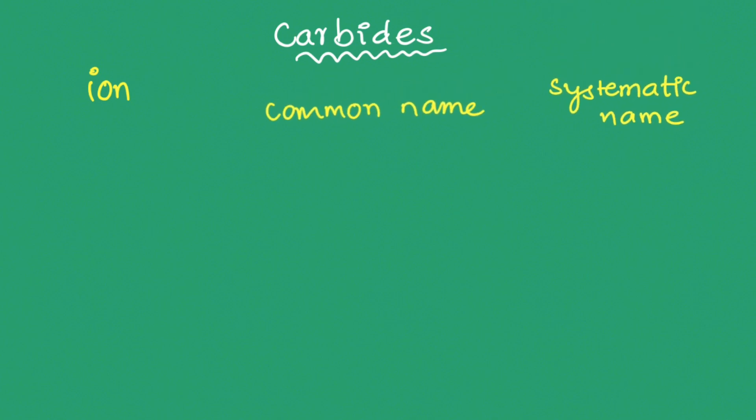Today I want to discuss carbides. We know some examples: aluminum carbide, beryllium carbide, calcium carbide, magnesium carbide. It is somewhat difficult to write their formula because different carbide ions exist with different charges. So I want to make it easy today. We have the ion, common name, and systematic name.